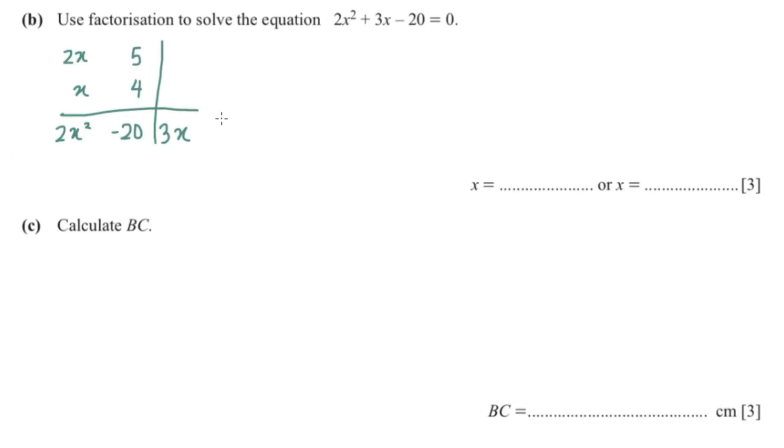5 multiplied with 4 is 20. This should be negative and this would be positive because it is negative 20. So that is negative 5x plus 8x equals 3x, and there we factorized it. So 2x minus 5 and x plus 4 equals 0.